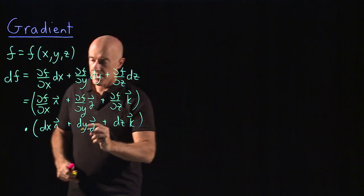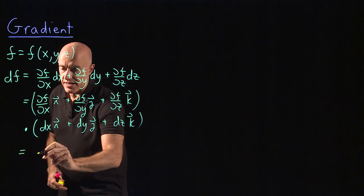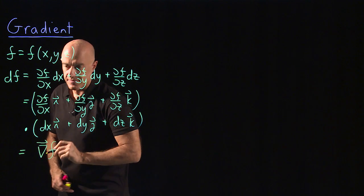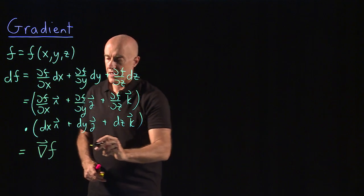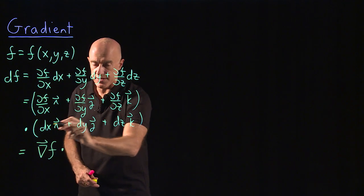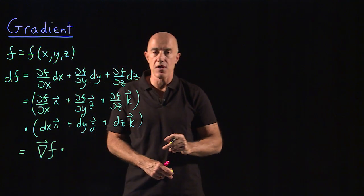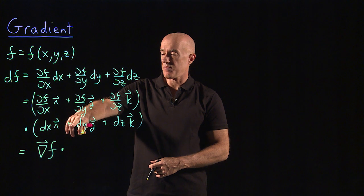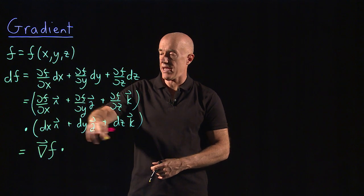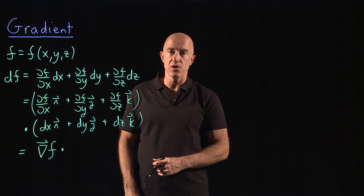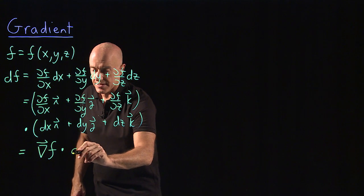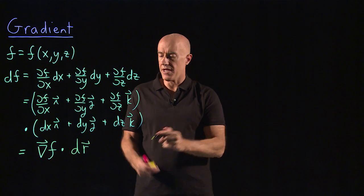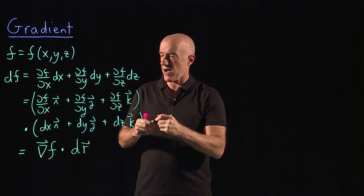This first vector is what's called the gradient. So we write that as the gradient of f. That's the definition of the gradient, and that's dotted with this second vector. Remember, our r was xi + yj + zk, so this is just what we call dr, the infinitesimal vector dr. So we have defined the gradient.